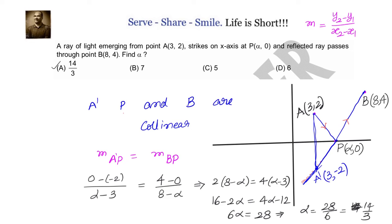So option A is the correct option. Let us recap: we were told a ray of light from A(3, 2) strikes the x-axis at P(α, 0) and the reflected ray passes through (8, 4). We used the reflection concept — the reflection of A on the x-axis is A'(3, −2), which must lie on the reflected ray. Since B, P, and A' are collinear, equating their slopes gives α = 14/3.